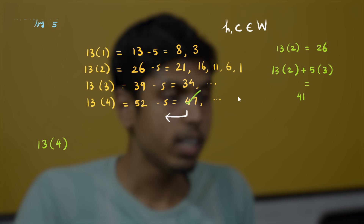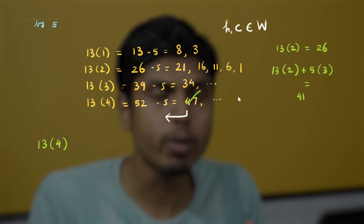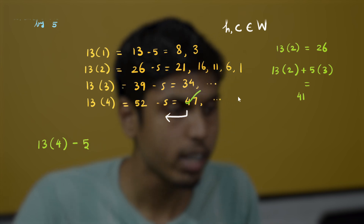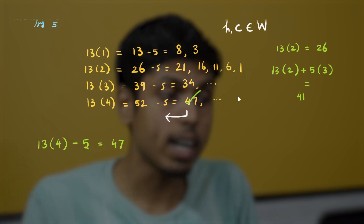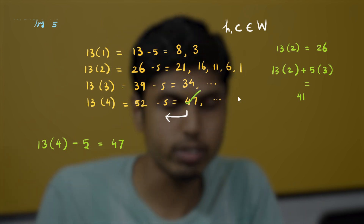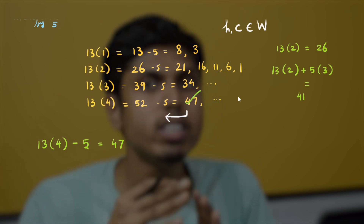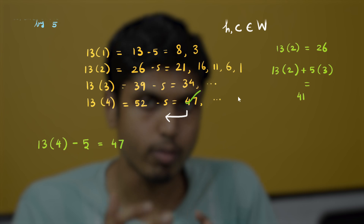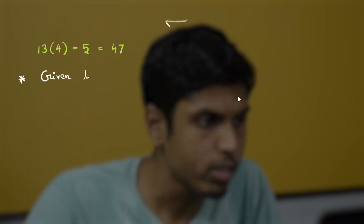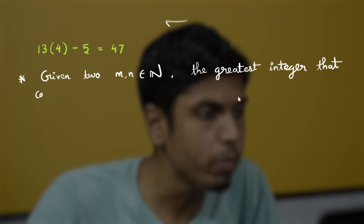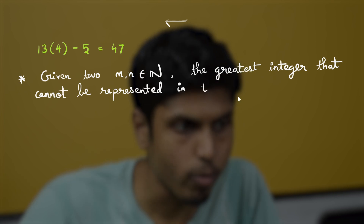So 13×4 = 52 is the first occurrence of a number leaving remainder 2 when divided by 5, which means 52 − 5 = 47 cannot be represented. It is also the largest such non-representable number because 13×4 corresponds to the largest 'first occurrence' across all remainder classes. We therefore conclude that 47 is the largest number that cannot be represented as a linear combination of 13 and 5.